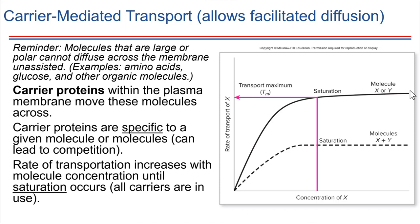Carrier proteins are specific. They don't carry just anything — it has to be something specific that they can recognize and bind to. Some carrier proteins move just one type of molecule, so either X or Y. Other carrier proteins can recognize a subset of molecules, so both X and Y could potentially be transported. And depending on how specific the carrier protein is, that will influence what is the maximum rate of transportation.